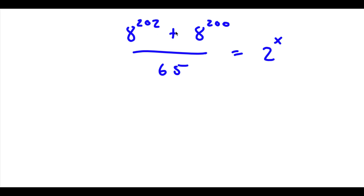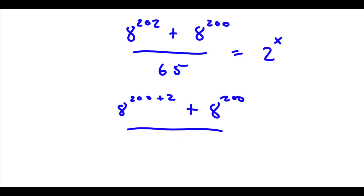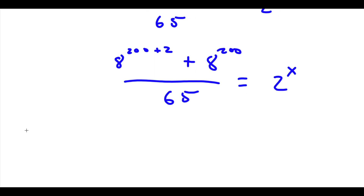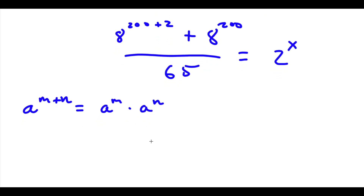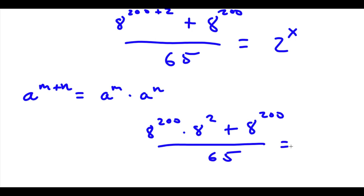Alright, so I have 8 to the power of 202 plus 8 to the power of 200, over 65, is equal to 2 to the power of x. Now 8 to the power of 202 we can rewrite as 8 to the power of 200 plus 2. So I have 8 to the power of 200 plus 2, plus 8 to the power of 200, over 65, is equal to 2 to the power of x. Now using the property a to the power of m plus n equals a to the power of m times a to the power of n, 8 to the power of 200 plus 2 equals 8 to the power of 200 times 8 to the power of 2. So I have this plus 8 to the power of 200, over 65, equal to 2 to the power of x.